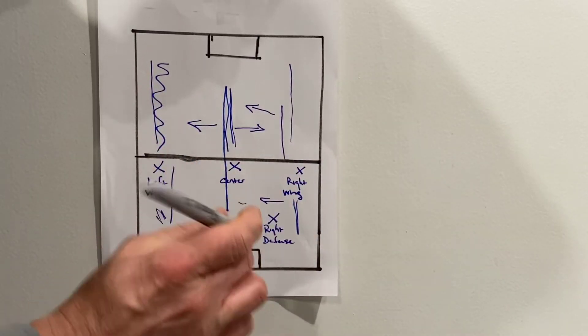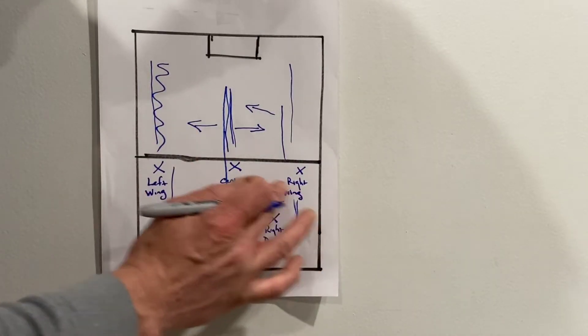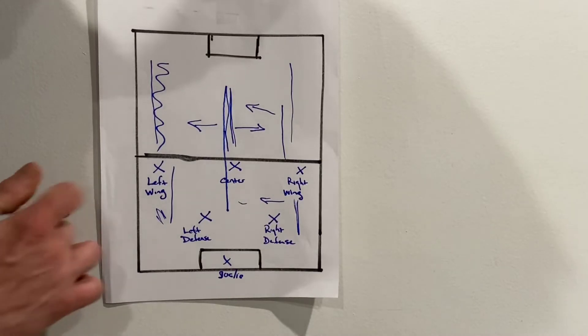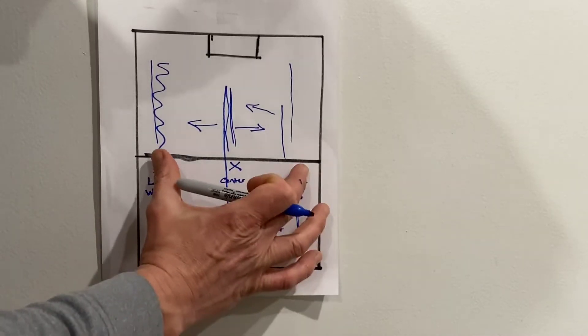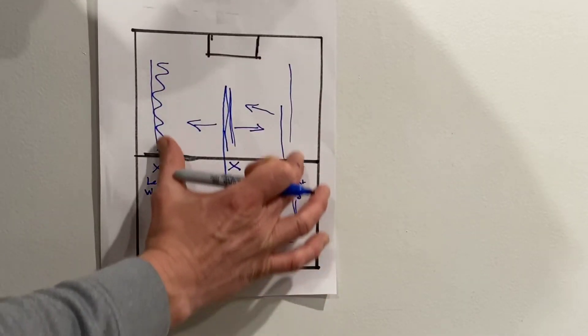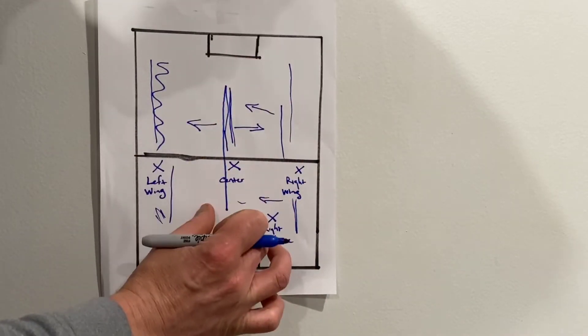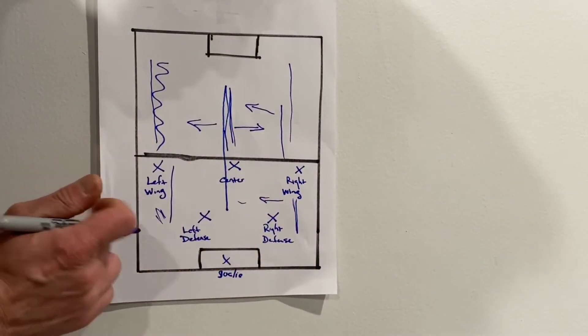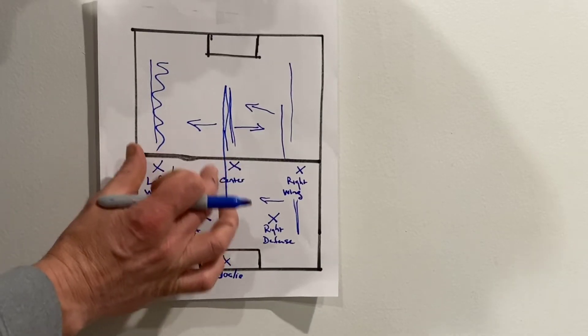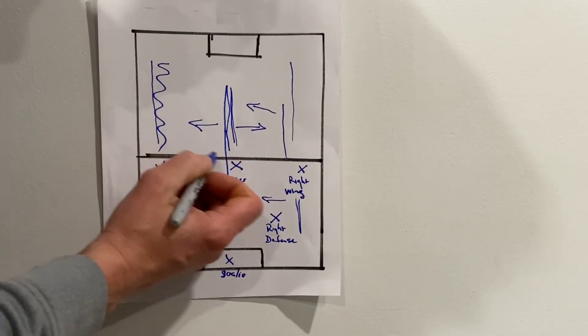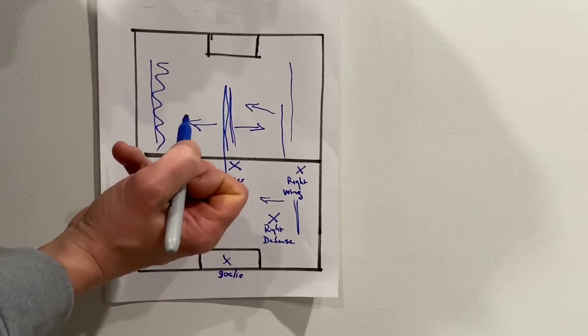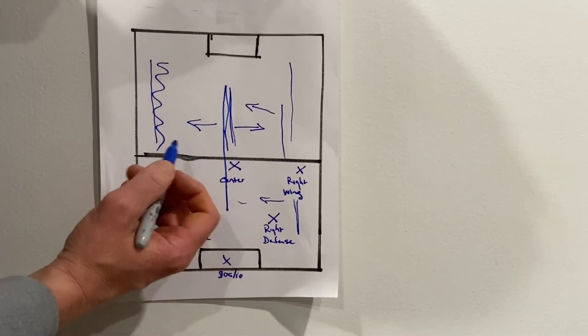So everybody's helping each other, but the most important thing about knowing the positions on the field is that everybody stays in their lane. Just pretend these are lanes and this is the center. What this is actually going to do is help you guys spread out and give each other opportunities to pass to one another.